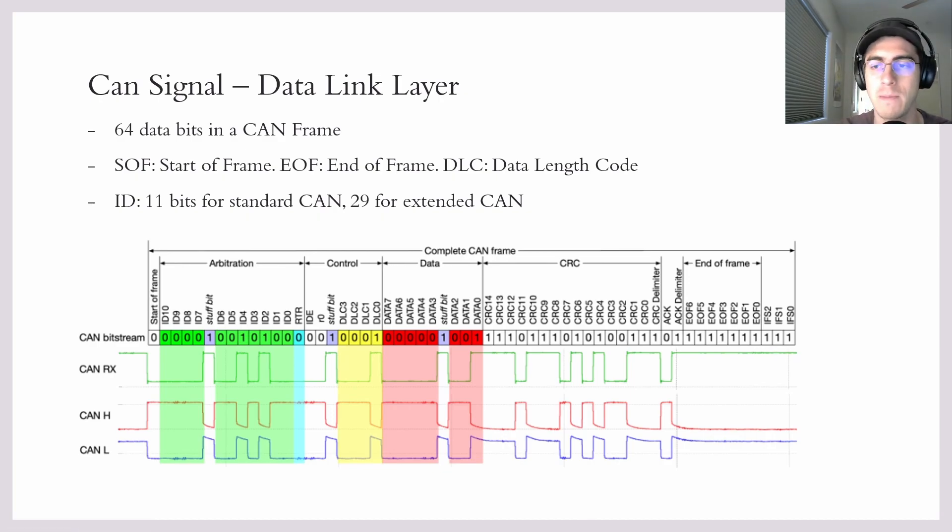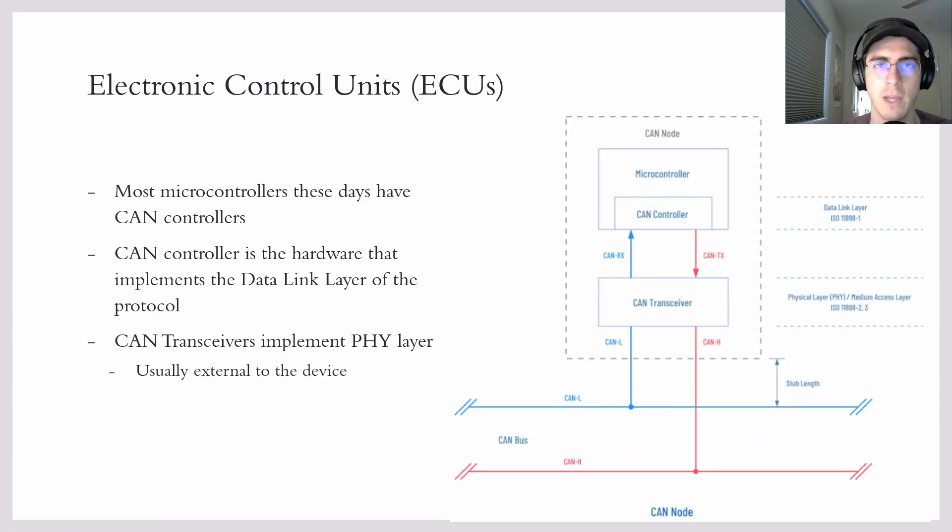And then there are the inter-frame spacing bits. And this is just three bits to just make sure that there is a bit of space between the CAN frames on the CAN bus. So now we have a pretty good idea of what the actual CAN bus and protocol looks like.